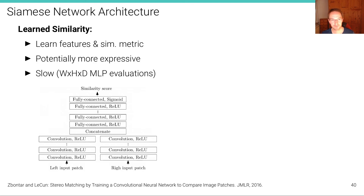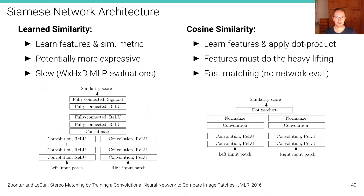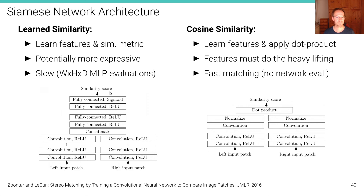In this unit we're still focusing on the block matching setup. In the original paper, two architectures for the matching problem were proposed: one I call learned similarity and the other cosine similarity. For the first architecture, we take a patch from the left image and a patch from the right image, run convolutions to compute features, then concatenate these features and run a fully connected multi-layer perceptron that outputs the similarity score for the two patches.